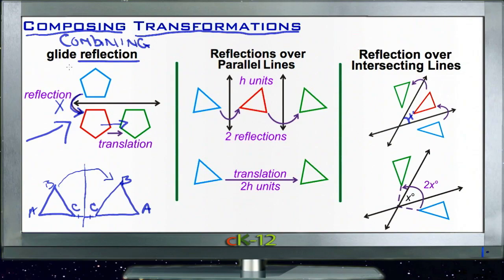To go from the red place to the green place, this is a glide reflection. In other words, it's like a slide or a translation plus reflection.